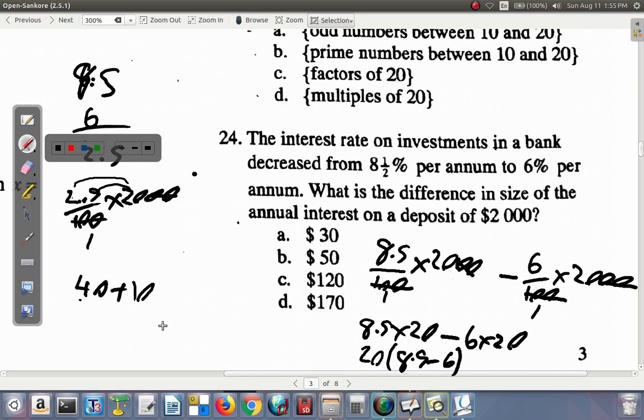If you wanted, you could just multiply each separately, 8.5 by 20. 8 times 20 is 160, so 8.5 plus half of 20, that's 170. This becomes 170 minus 120. So 170 minus 120, that's like 70 minus 20, and that's 50 again. So, whichever way you want to do it, you choose the method you want.